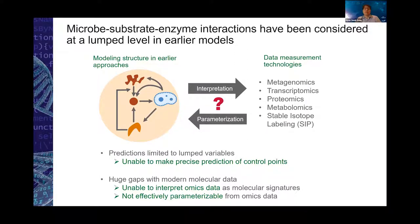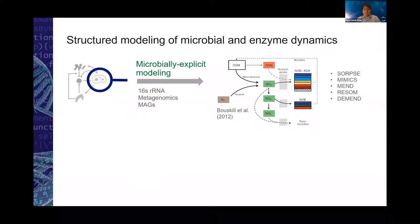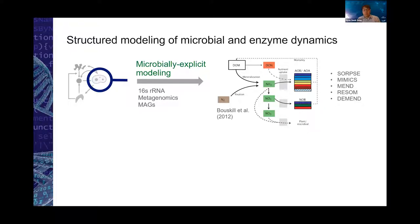We need a better model — we need to increase the resolution of these three components. There has been consensus on the importance of increasing the resolution on the microbial part, and that led to so-called microbially explicit modeling. This is a cool concept. Modern approaches of microbial explicit modeling take 16S rRNA, metagenomes, and omics as potential input data to parameterize this type of model. In this model, we identify distinct contributions or functions — the biological function of individual species or their functional guilds — such as which groups of organisms are oxidizing ammonium or how they are involved in the nitrogen cycle.